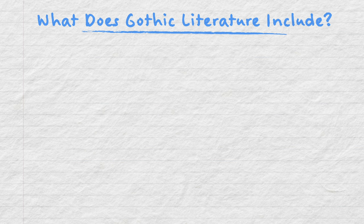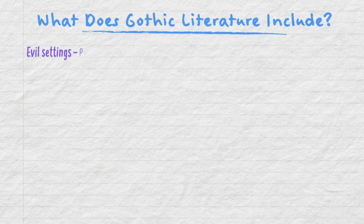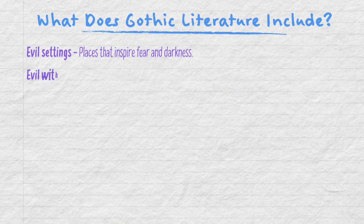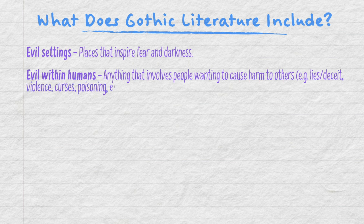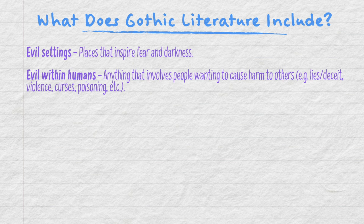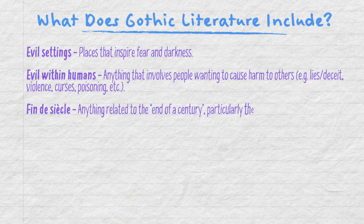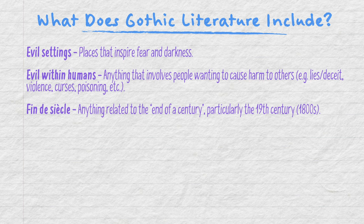Stories that are in the Gothic literature genre often include the following: evil settings — places that inspire fear and darkness; and evil within humans — anything that involves people wanting to cause harm to others, for instance lies and deceit, violence, curses, poisoning, etc. These stories also tend to relate to fin de siècle, which means anything to do with the end of a century, particularly the 19th century, which was the 1800s.